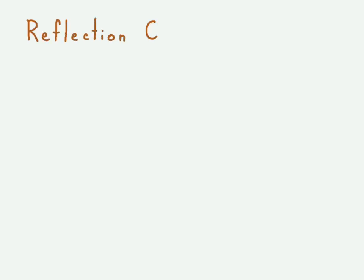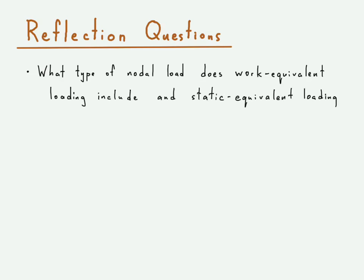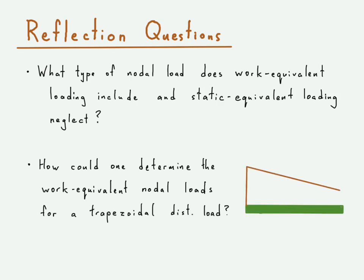Now we'll finish off with some reflection questions. First: what type of nodal load does work equivalent loading include that static equivalent loading does not? Second: how could one determine the work equivalent nodal loads for a trapezoidal type of load distribution — that is, a linearly distributed load with one value at one end and a different value at the other end. That should conclude our video on work equivalent loading.